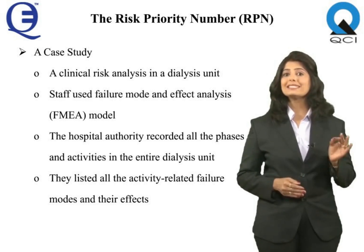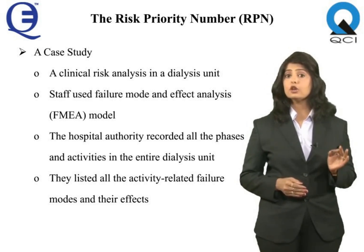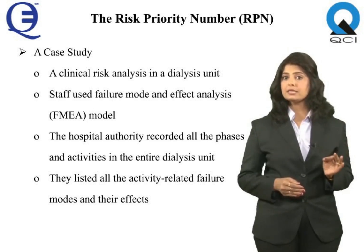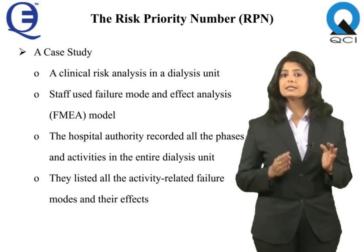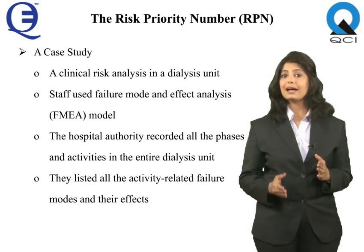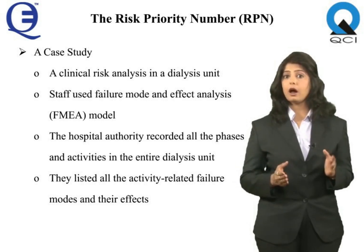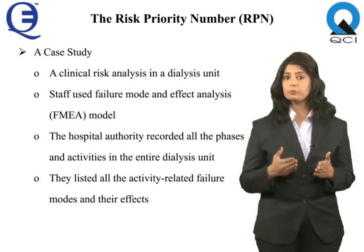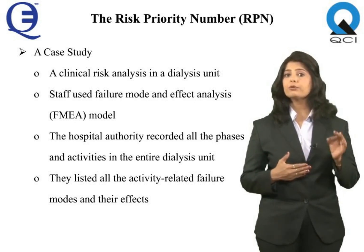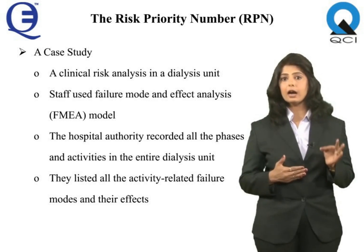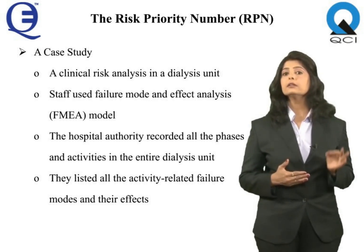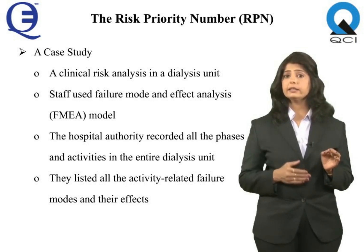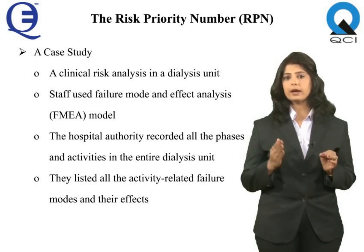While doing hazard analysis, they listed all the activity-related failure modes and their effects, described control measures, assigned severity, occurrence, and detection scores for each failure mode, and calculated the risk priority numbers (RPNs) by multiplying the three scores. The total RPN is calculated by adding all the individual failure mode RPNs.